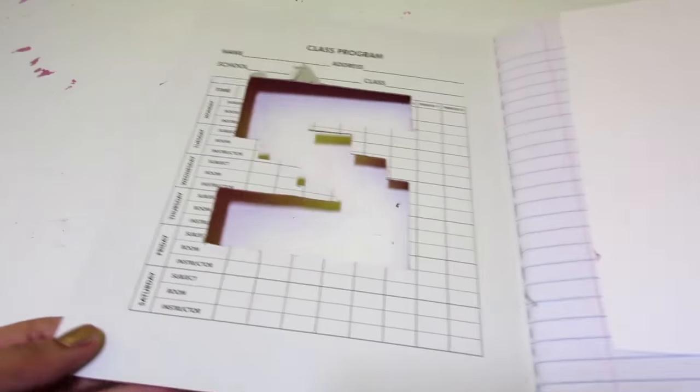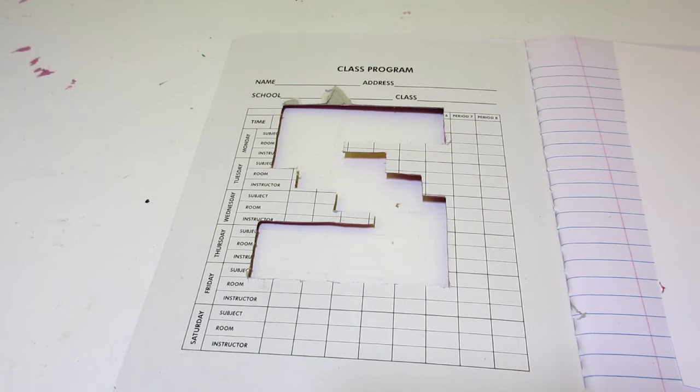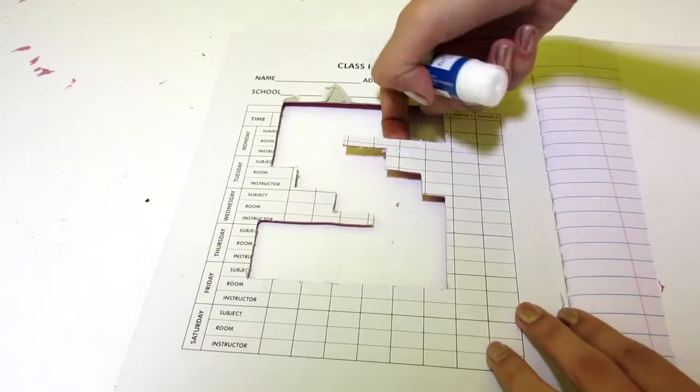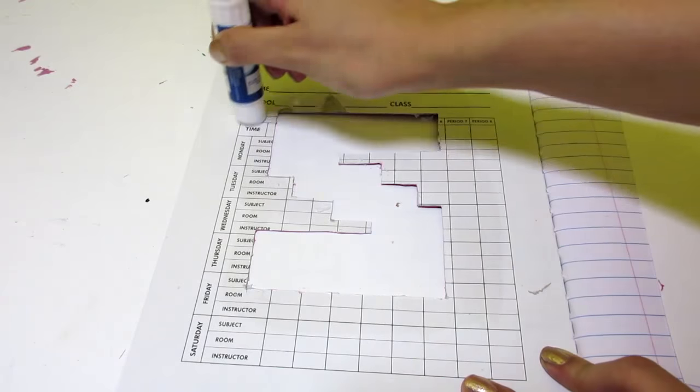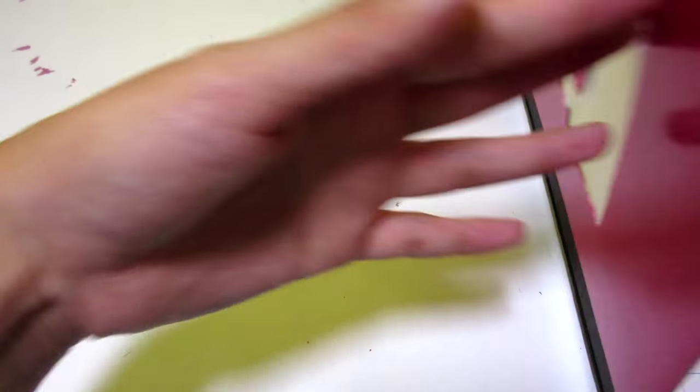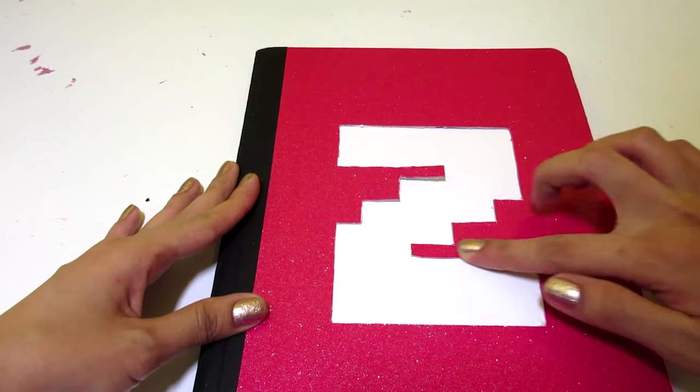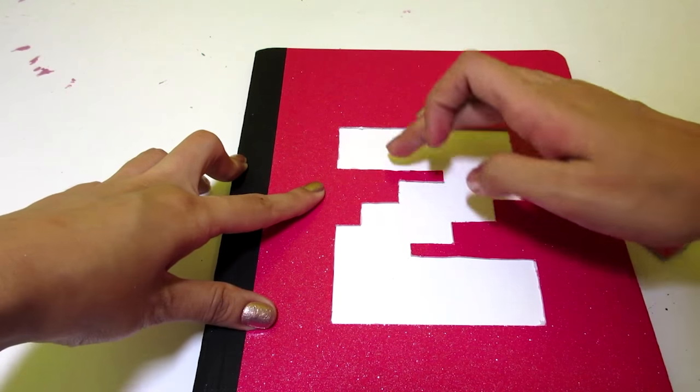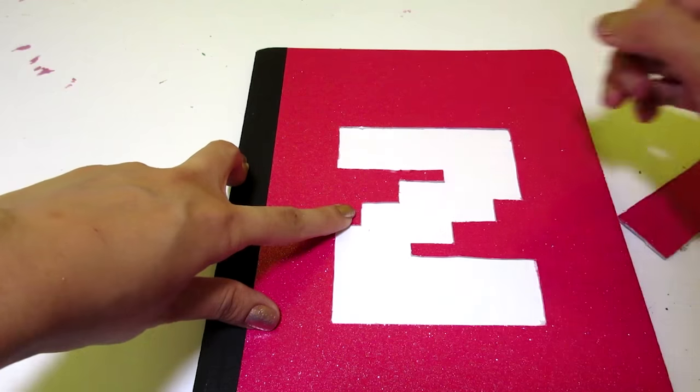When you're done, grab your glue stick, open up your notebook and glue the back of your front cover. When you've done that, stick your card stock onto the back. Now, you can close your notebook and push around the edges of your letters to make sure that the card stock is glued on properly.